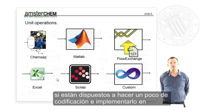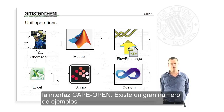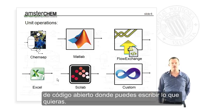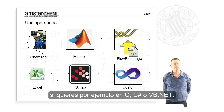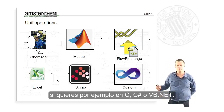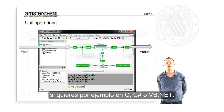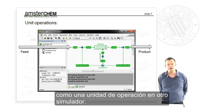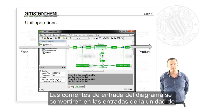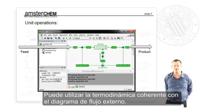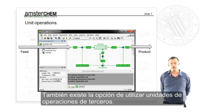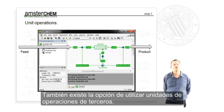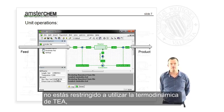If you want, you can write your own unit operation. If you're willing to do a bit of coding and implement the CAPE-OPEN interfaces — there are open source examples available — you can write whatever you want in C, C#, VB.NET, or any language you prefer. You can even take an entire COCO flow sheet and use it as a unit operation inside another simulation. There is also of course a choice of third-party unit operations. All of these arguments hold for thermodynamics as well — you are not stuck with TEA thermodynamics; you can use your own or third-party thermodynamics.